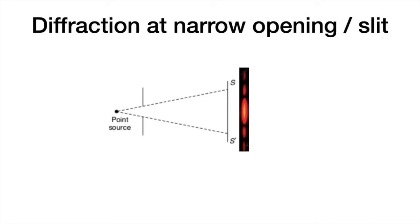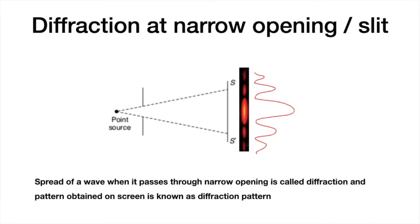Or if we try and look at its intensity profile, it will come like this. This is called a diffraction pattern. So it is nothing but redistribution of light intensity when it passes through a narrow or small opening. The spread of a wave when it passes through a narrow opening is called diffraction, and the pattern that we obtain on the screen is called a diffraction pattern.